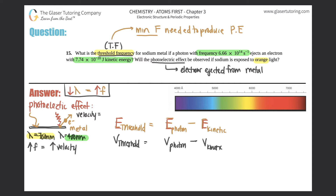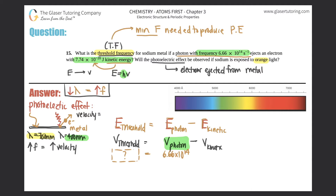Do we know anything right now? They tell us the photon has a frequency of 6.66 times 10 to the 14th — we know that. We're looking for the threshold frequency. We have the kinetic energy value but not its corresponding frequency, so we need to convert energy to frequency using the formula E = hv.